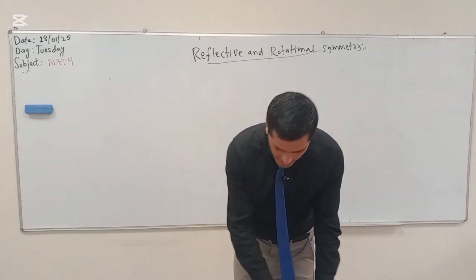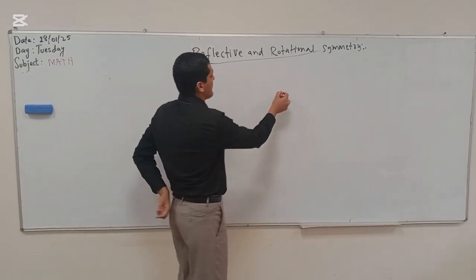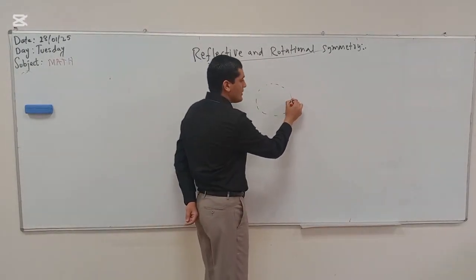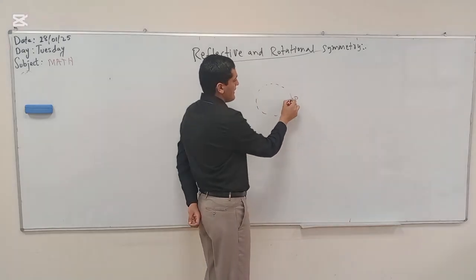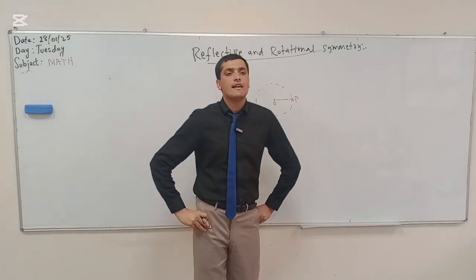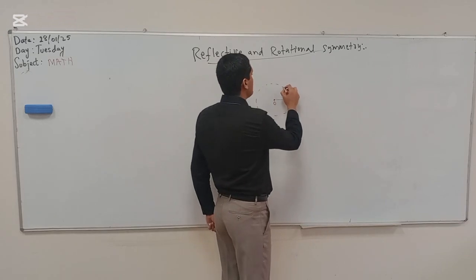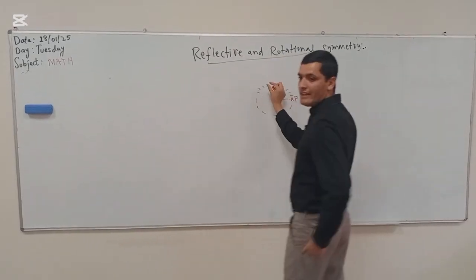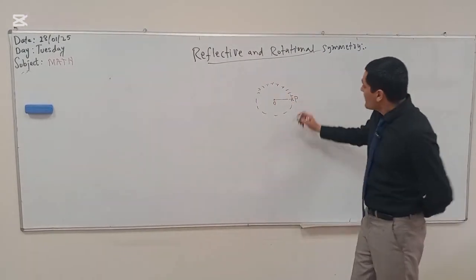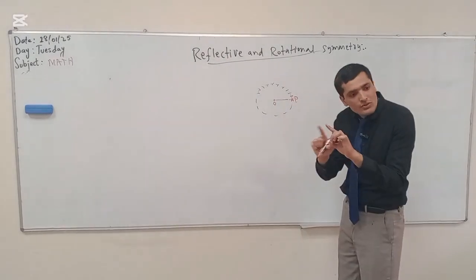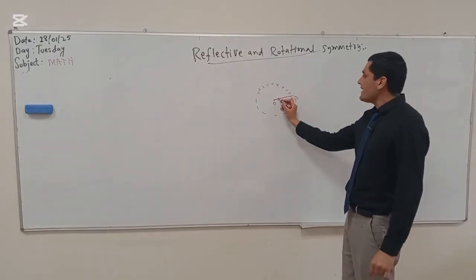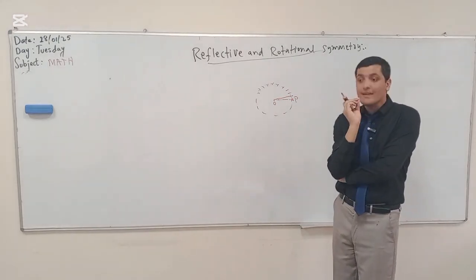To define it formally: suppose this is a circle, and this point P is at the top, with the center of the circle here. I divided the circle into 360 equal parts. Each part is equal to the next. Now the two closest parts — joining them — gives some rotation. This rotation is called 1 degree.